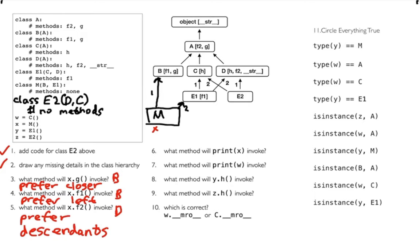Let's mix in special methods with inheritance. If I call print(x), what is that going to invoke? X is of type M, and remember when I print things I'm calling the __str__ method. I have one __str__ here and another one down here. I prefer descendants — this one is a descendant of that one, and that's my strongest rule. So it's going to end up using the D version.